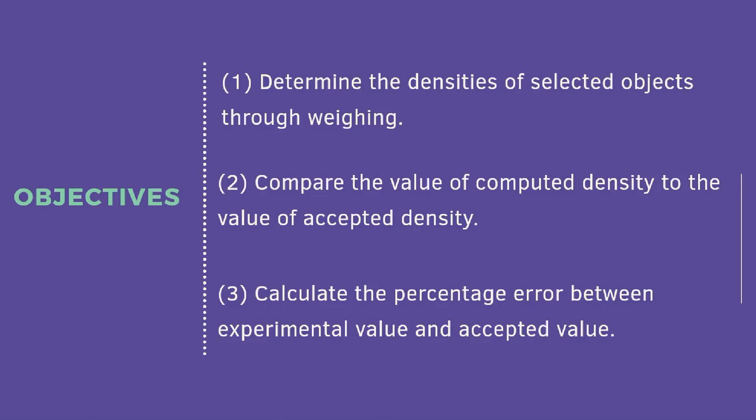The idea of this experiment is through the Archimedes principle. There is a story: in the first century BC, the Roman architect Vitruvius related a story of how Archimedes uncovered a fraud in the manufacture of a golden crown commissioned by Hiero II.